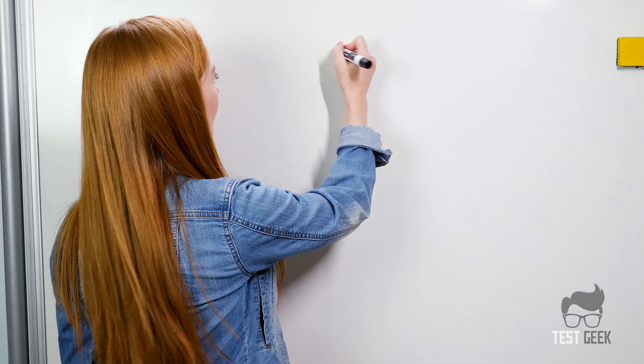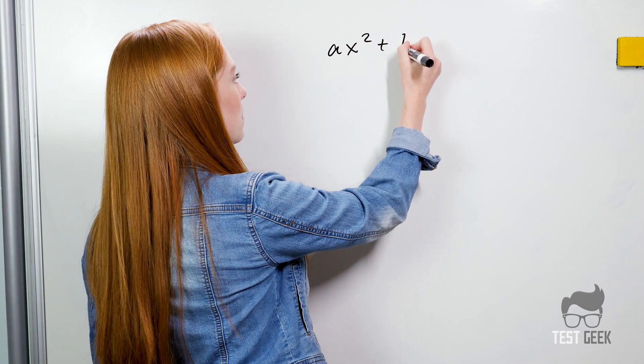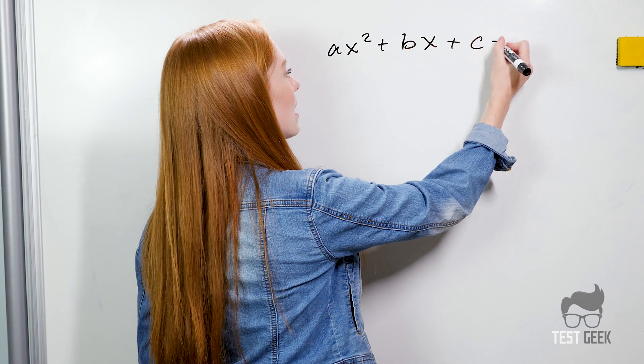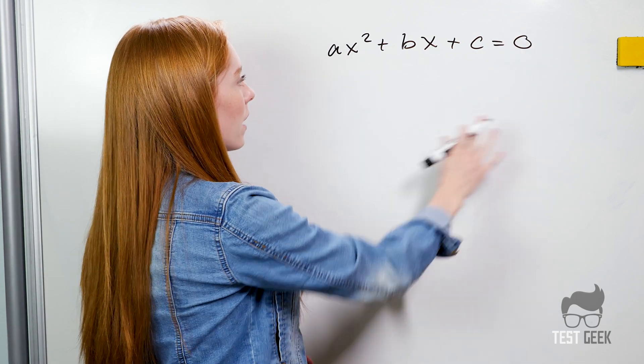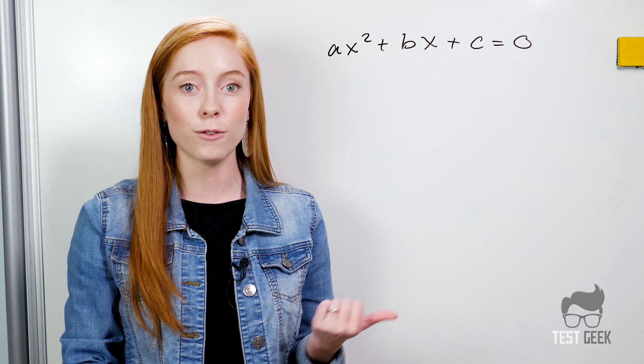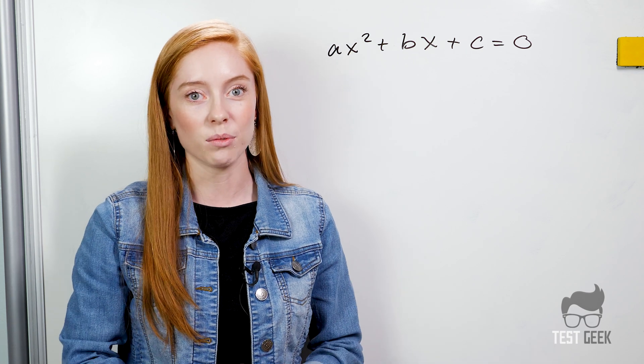Trinomials are some of the most important nonlinear equations that you'll see on the test. They take the form of ax squared plus bx plus c equals zero. This is very important to remember so that when you see something that takes this form you can recognize it as a trinomial.